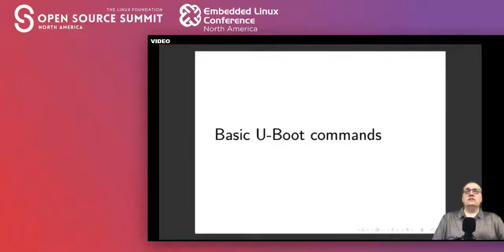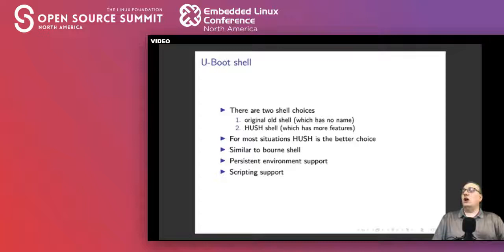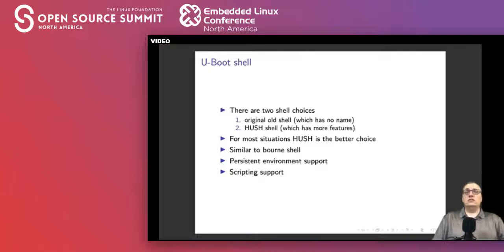Now let's look at the basic uBoot commands. uBoot has a couple of different shell options: there's the older original shell which never had a name, or what's called the Hush shell. The Hush shell was ported over from BusyBox originally and is a much better choice because it has more options. We will be talking about the Hush shell. It's very similar to the Bourne shell — much like a Unix shell. It has key-value storage for environment which can be made persistent, and supports scripting for failover and upgrades.